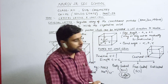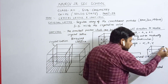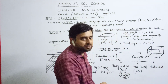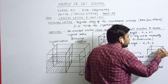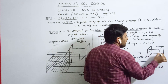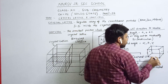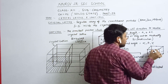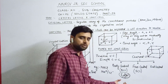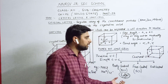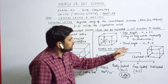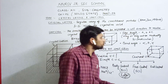In the edge-centered unit cell, in between the two constituent particles, an edge center is present. There are twelve edges in a unit cell, so there are twelve edge centers. Eight atoms are at the corners and twelve atoms are at the edges of the unit cell.